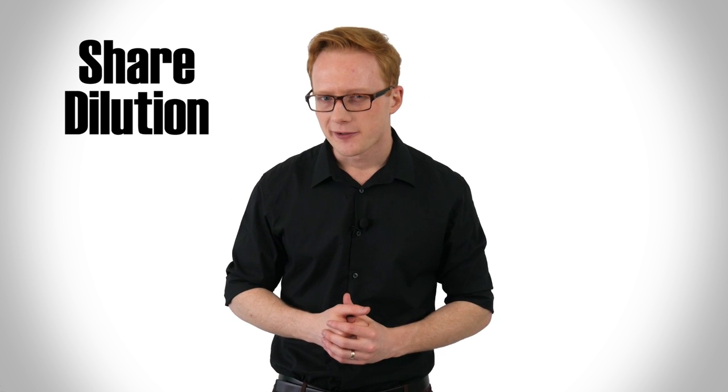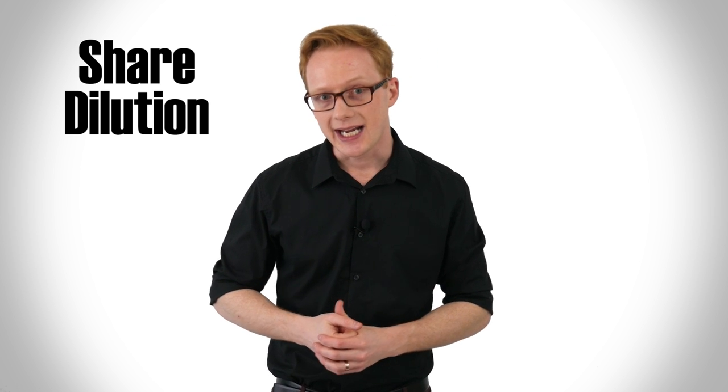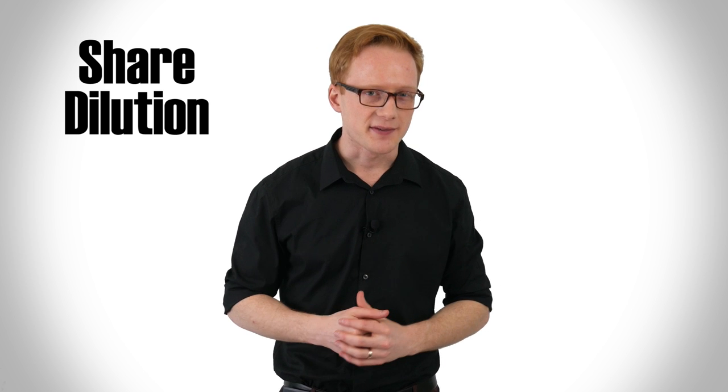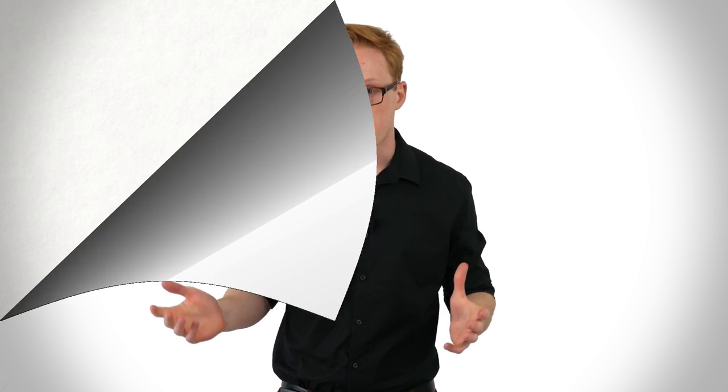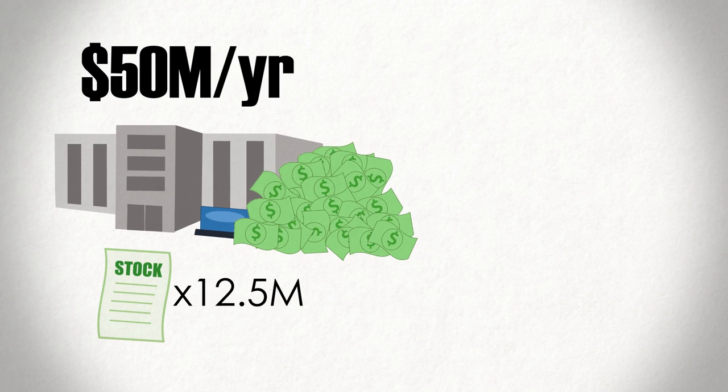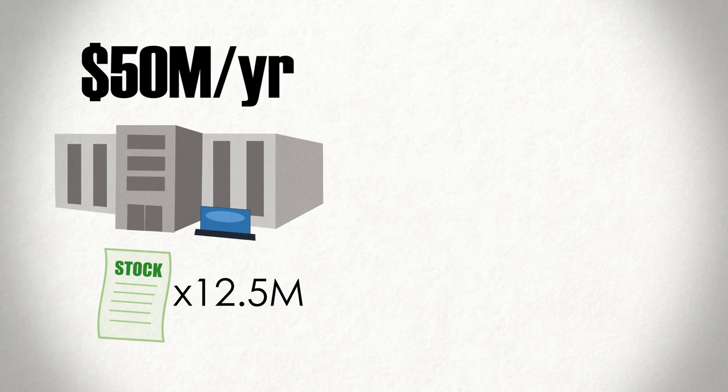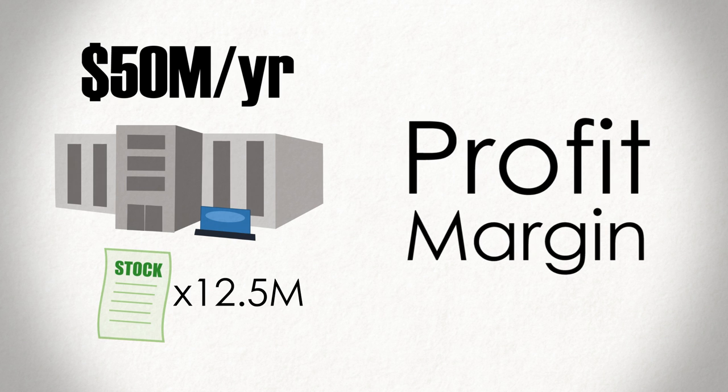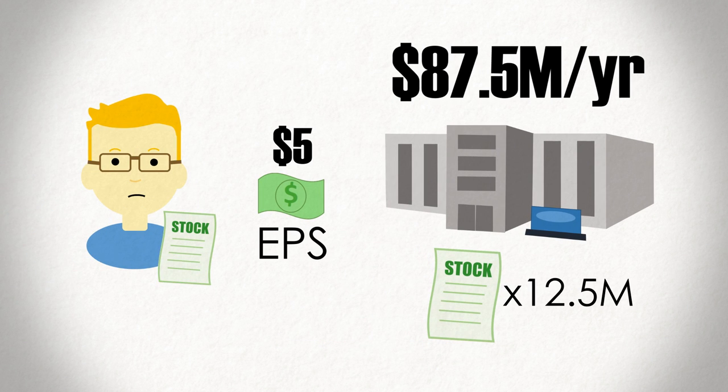In some cases, however, share dilution may allow your company to materially improve its business, and the pain caused by the share dilution may be offset by the improved profitability of the firm. Going back to our example, imagine that the company issues the additional 2.5 million shares, but the money they raise from the issuance is used to buy a company with intellectual property that is expected to greatly improve the company's margins. And the next year they see their earnings jump to 87.5 million. In this case, your earnings per share will increase from $5 to $7, a pretty solid return.